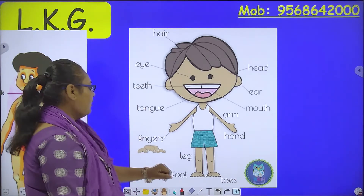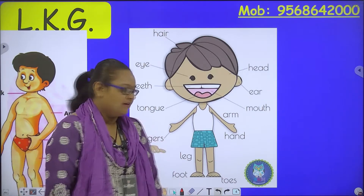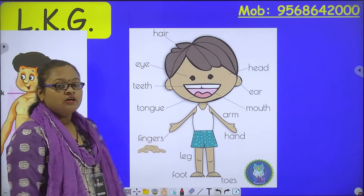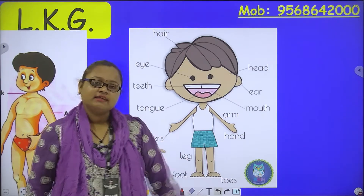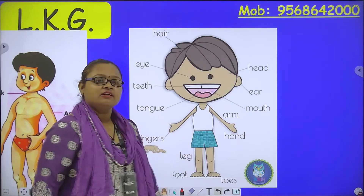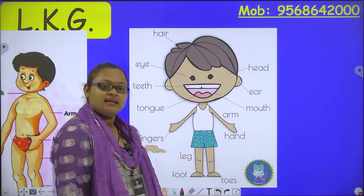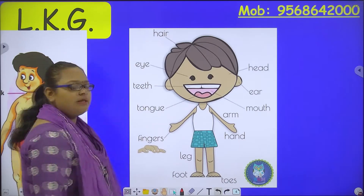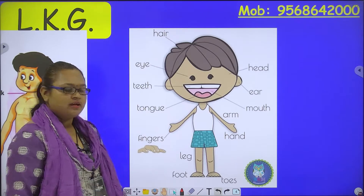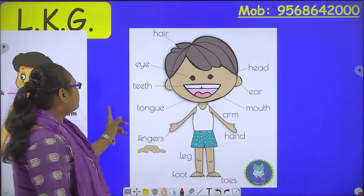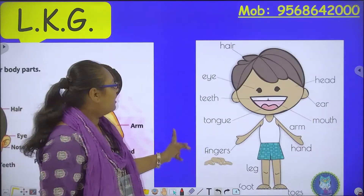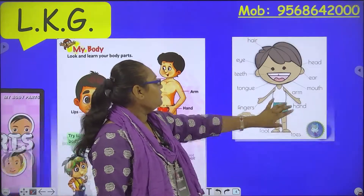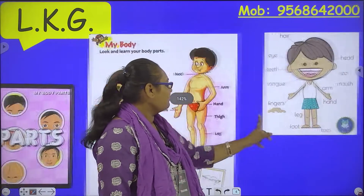Now, this is leg. Then we have foot. Foot — kis ye hota hai? Chalne ke liye. We use our foot to walk. So, these are our body parts.